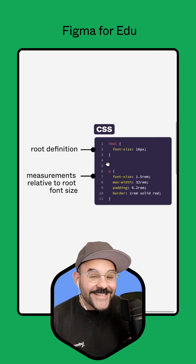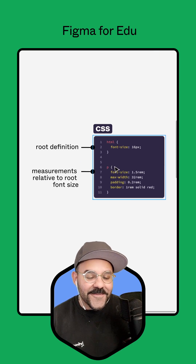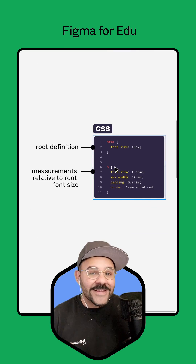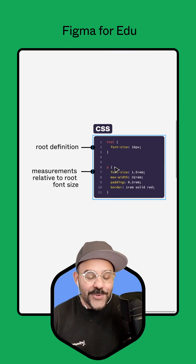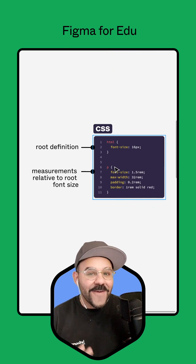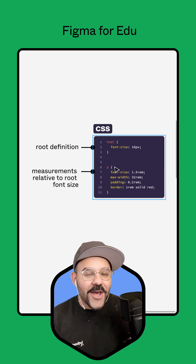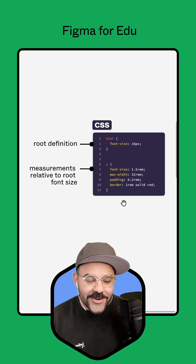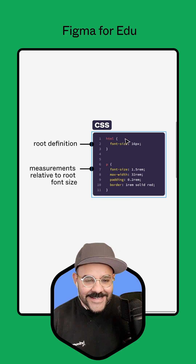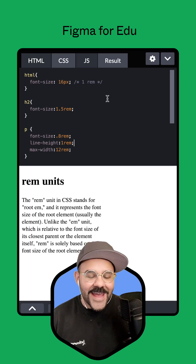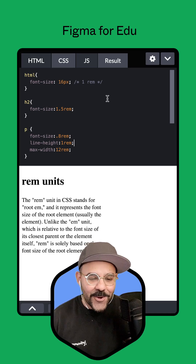Now in CSS, you can define a root M size — the M size being a relative unit of measure. As that root font size increases, the rem value also increases. Here you can see this represented in CSS. Let's take that one step further and look at this CodePen here.